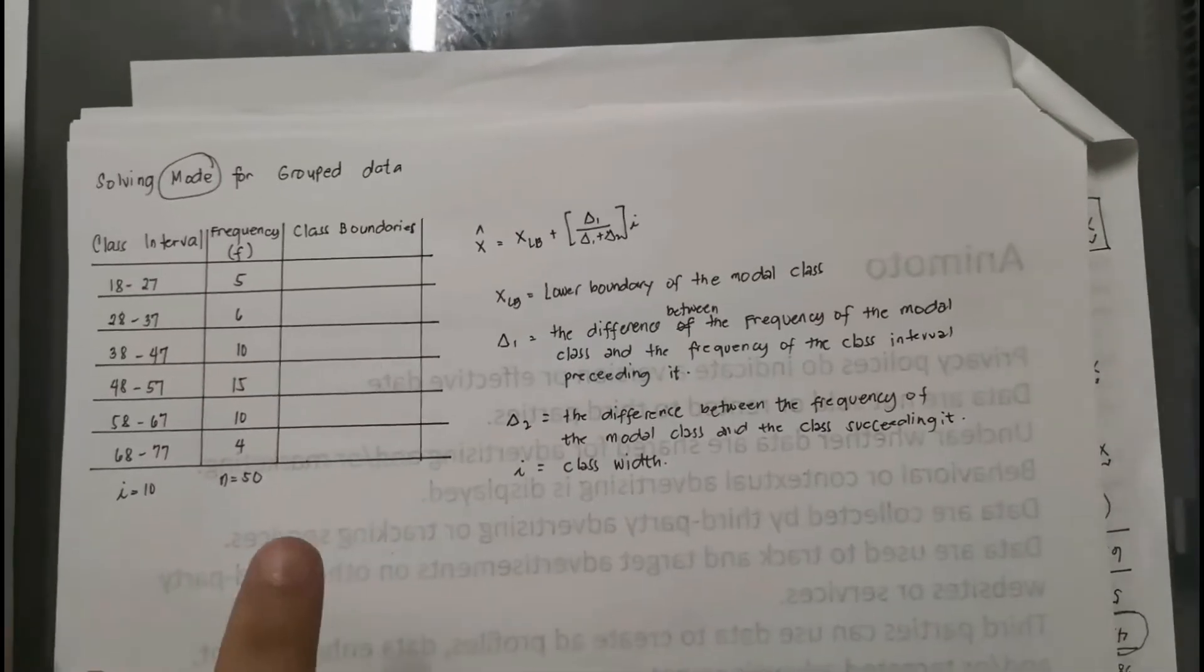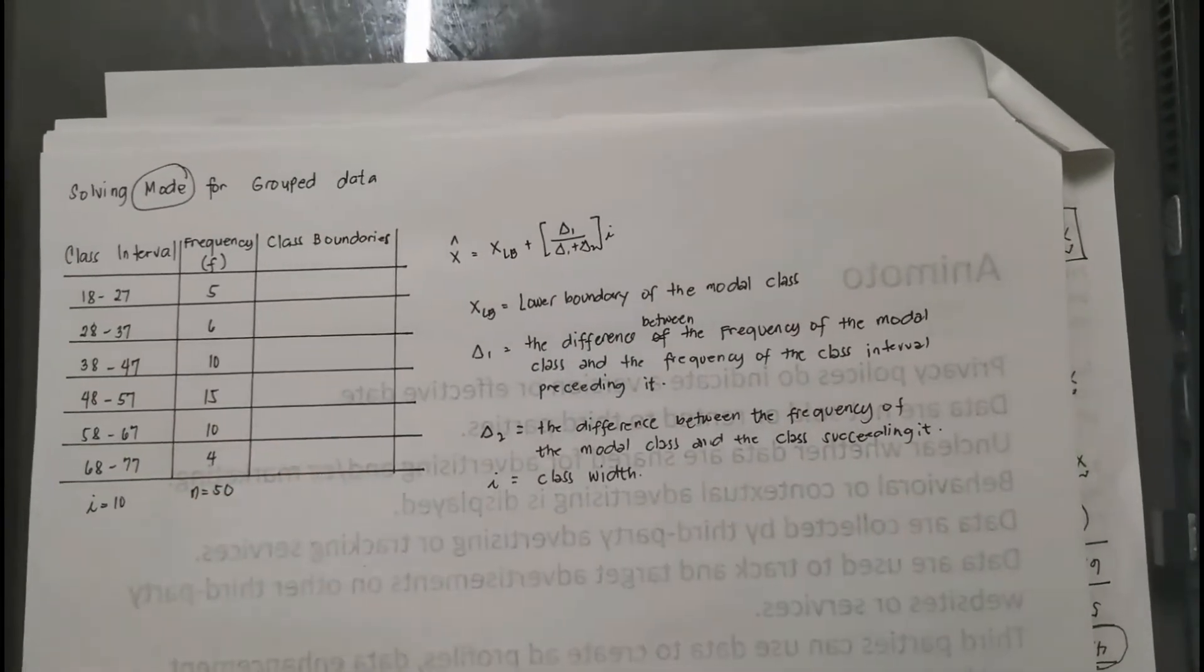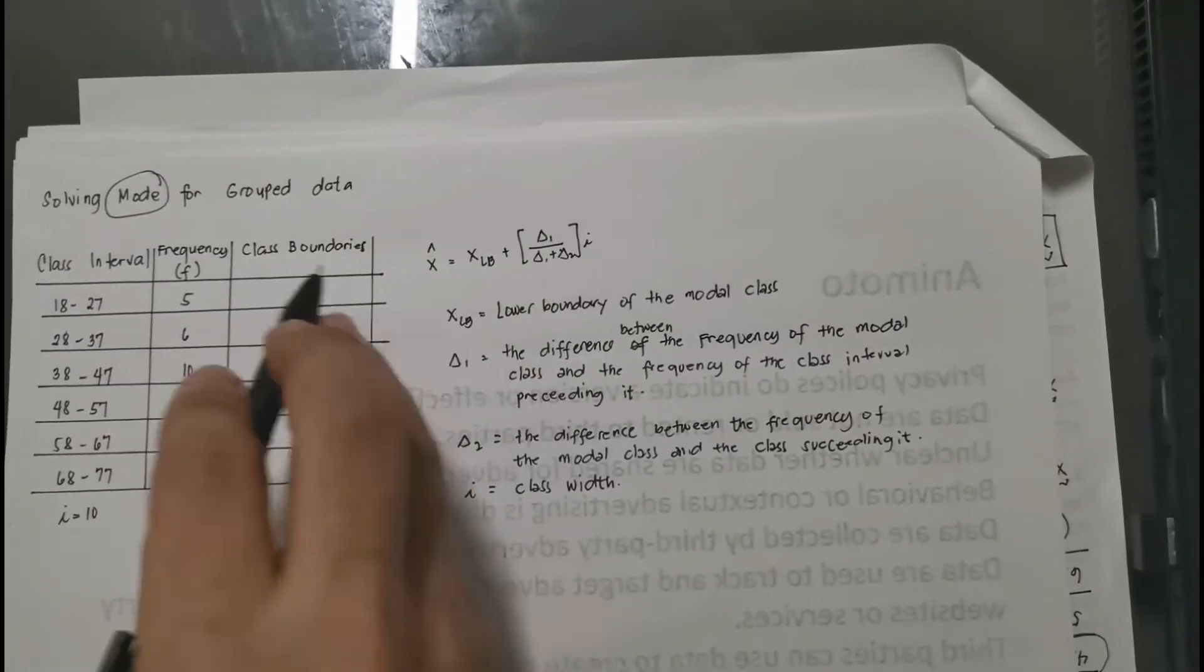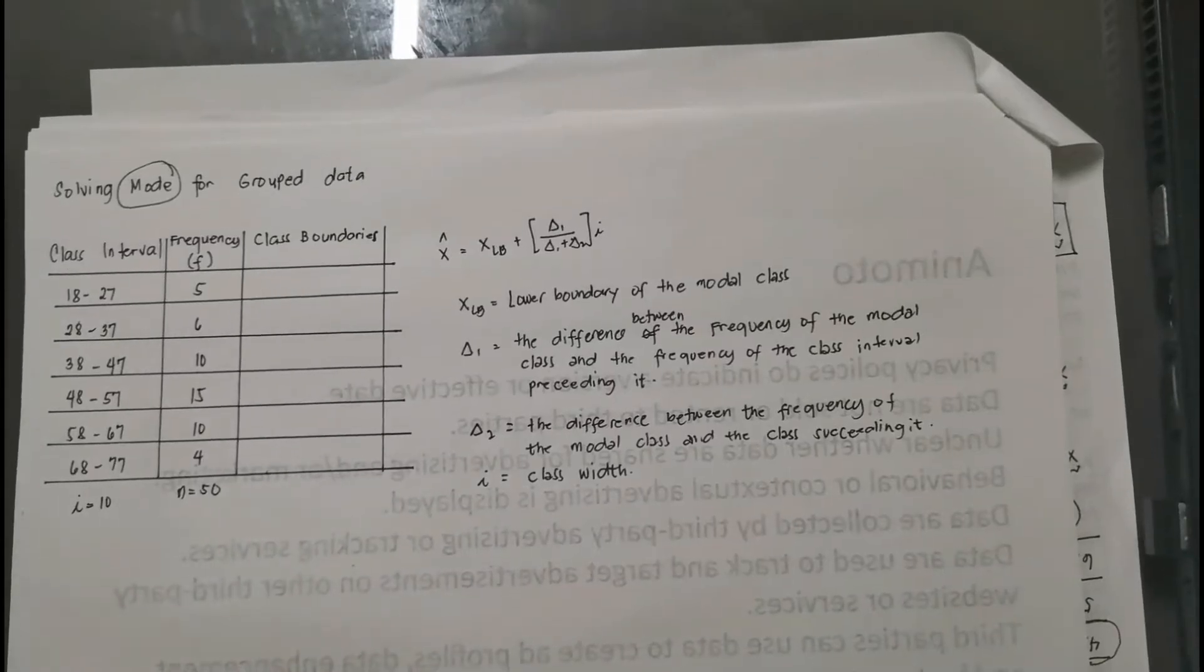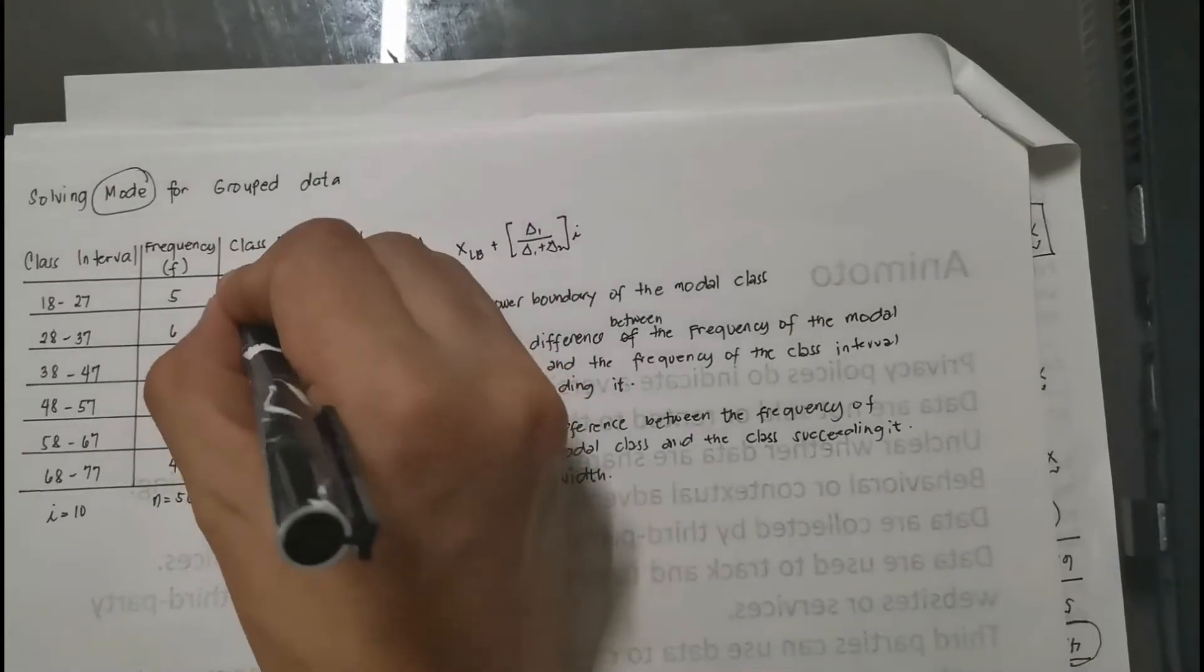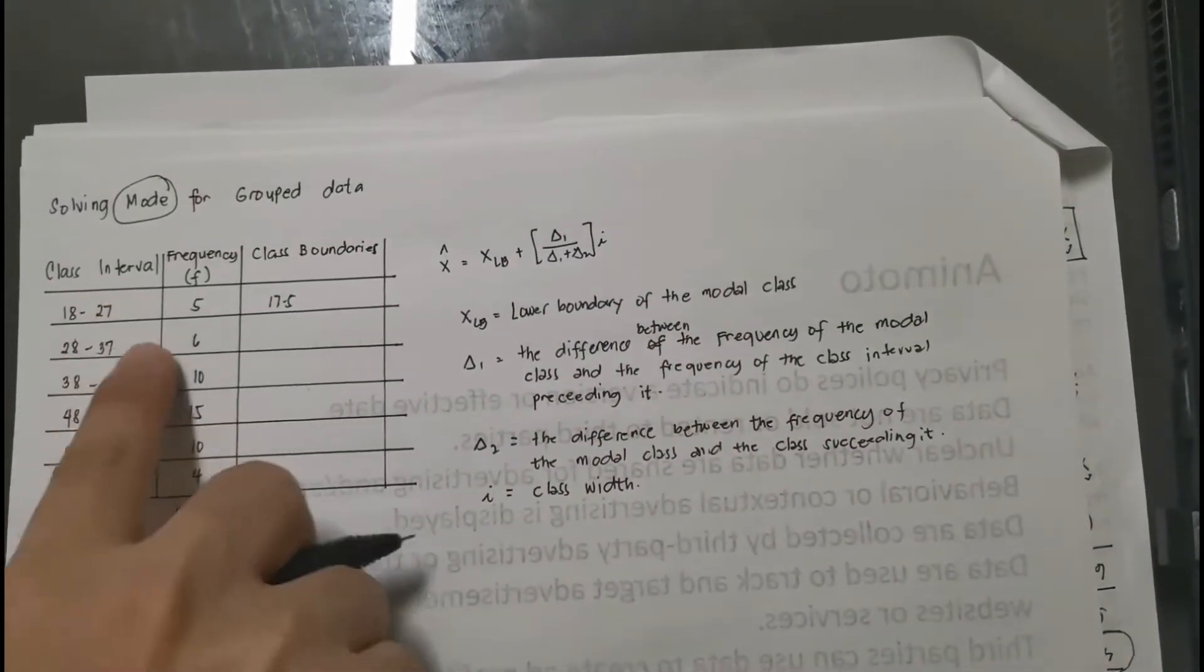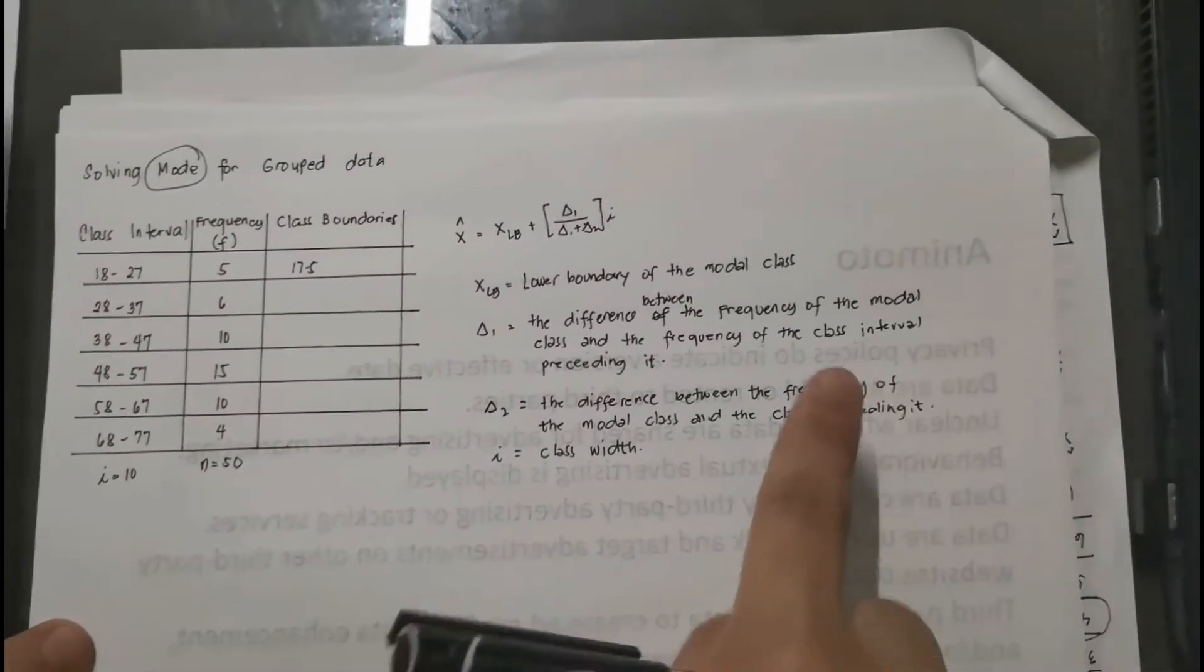So quickly, how do we fill out the class boundaries? Again, to fill out the class boundaries, the lower limit or the lower boundary is simply the lower limit minus 0.5. So the lower limit for this interval is 18 minus 0.5, that is 17.5. And then also to get the upper boundary, that is the upper limit of the class interval plus 0.5, so that means to say we have 27.5.